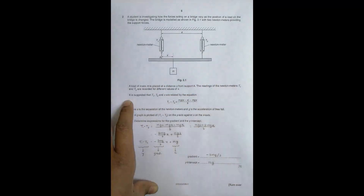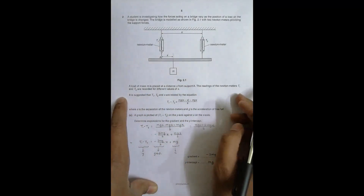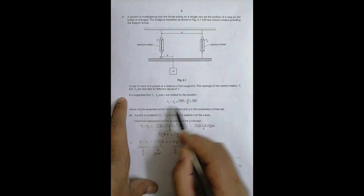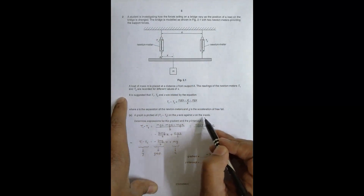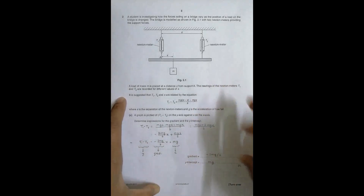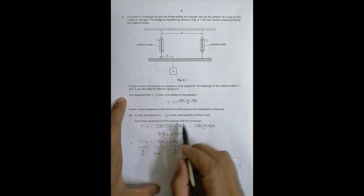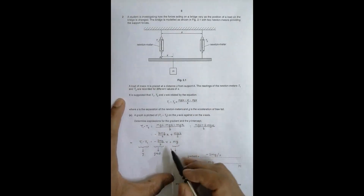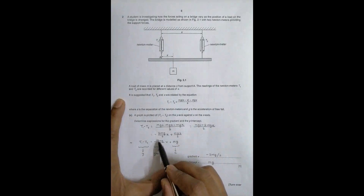T1, T2, and X are related by an equation where S is the separation between the Newton meters and g is the acceleration of free fall. A graph is plotted of T1 minus T2 on the Y-axis and X on the X-axis. The first task is to derive expressions for the gradient and the Y-intercept. We multiply the terms, add them, and separate the quantity with X. This gives us the gradient equal to minus 2mg divided by S.